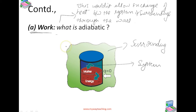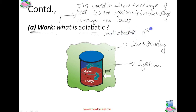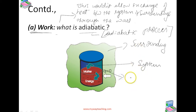The manner in which the state of such a system may be changed is called an adiabatic process. An adiabatic process is a process in which there is no transfer of heat between the system and surroundings. The wall separating the system and the surroundings is called the adiabatic wall.